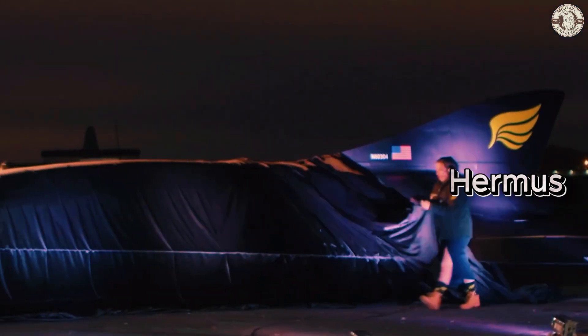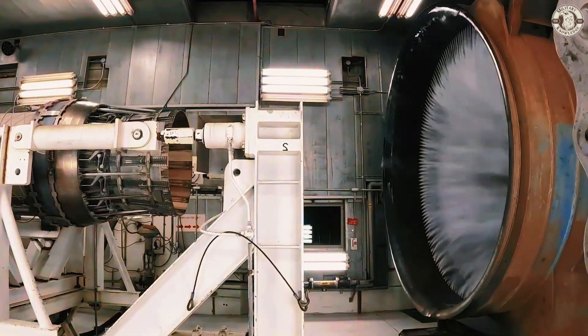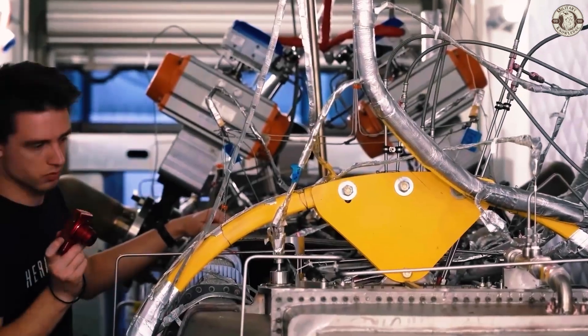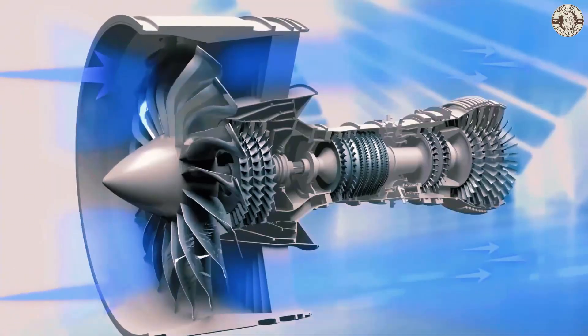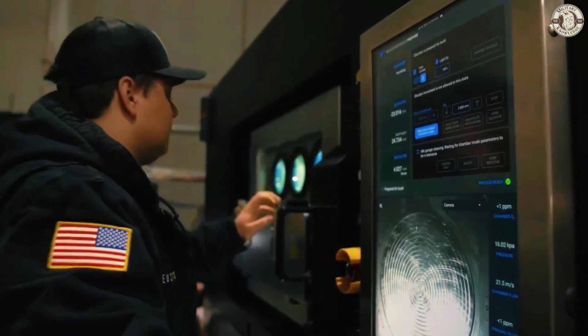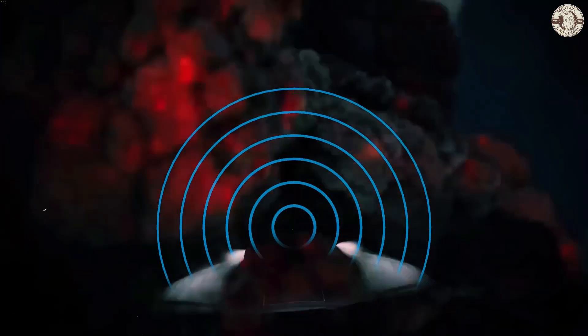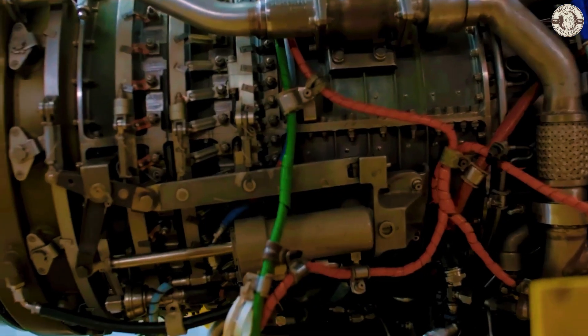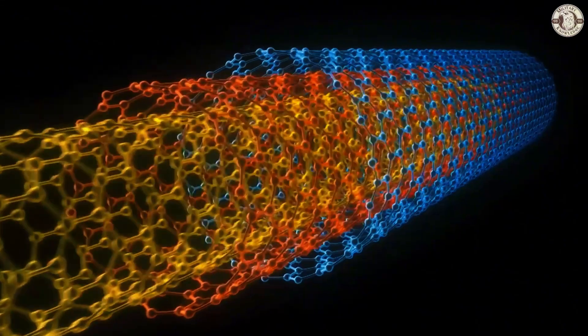That's where Hermus steps in with a game-changing solution: specialized pre-coolers. These pre-coolers are designed to rapidly cool the superheated air before it enters the engine, allowing the engine to keep running smoothly even at hypersonic speeds. Think of it like a high-tech air conditioner for the engine, preventing it from overheating when it's flying faster than a bullet. This innovation is critical because without it, the intense heat generated at these speeds would make hypersonic flight impossible. The pre-coolers enable the aircraft to sustain those extreme velocities, making Mach 5 flight not just a dream but a reality.